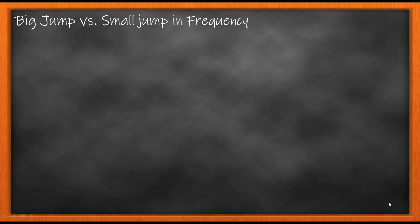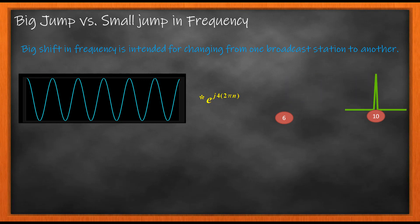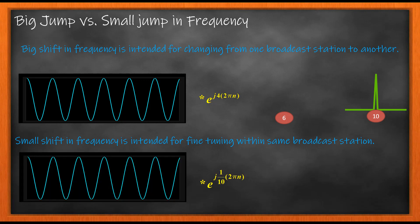Let us now look at big jumps versus small jumps in frequency. Big jumps represent shifts in integer multiples, and small jumps represent fractional multiples. For example, for the same cosine signal, if we multiply it with a 4-unit shift exponential, the Fourier transform shifts from position 6 to position 10. This big shift can be used when you want to go from one broadcast station to another. A small shift is intended for fine tuning within the same broadcast station — for example, using j times 1/10 gives a very small shift from 6 to 6.1. Both are useful and use the same frequency shifting property.